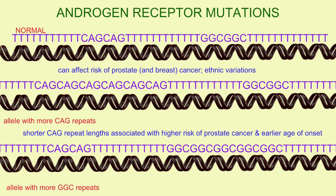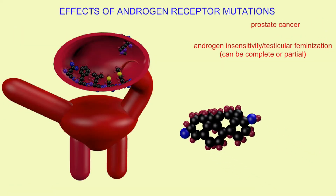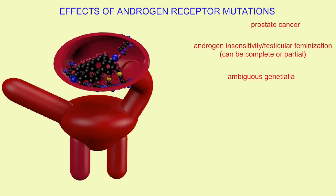This can affect the risk of prostate cancer and in some cases breast cancer. There are ethnic variations where members of an ethnic group generally have shorter or longer numbers of repeats, and this can be correlated with rates of cancer. Shorter CAG repeat lengths, for example, are associated with a higher risk of prostate cancer and an earlier age of onset.